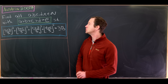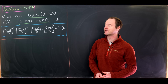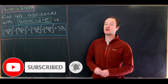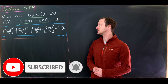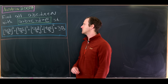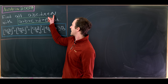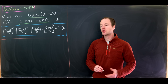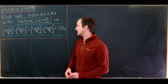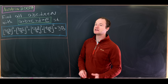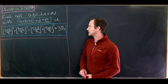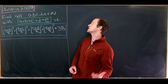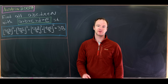Today we've got a nice problem from the 2007 Austrian Math Olympiad, and it involves one of my favorite functions, the floor function. Our goal is to find all natural numbers A, B, C, D, and E, where A > B > C > D > E > 0, since we're not including zero in the natural numbers in this case.